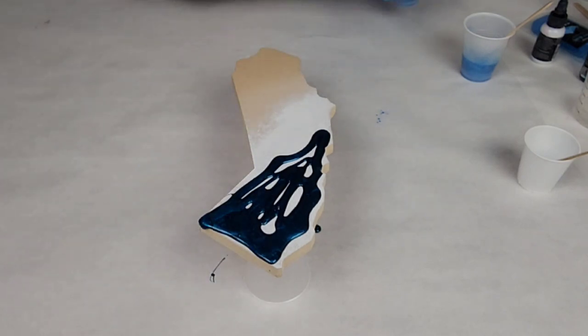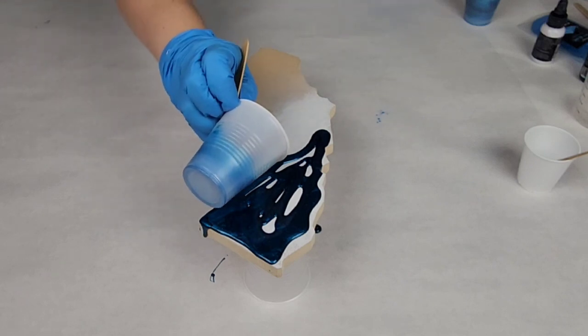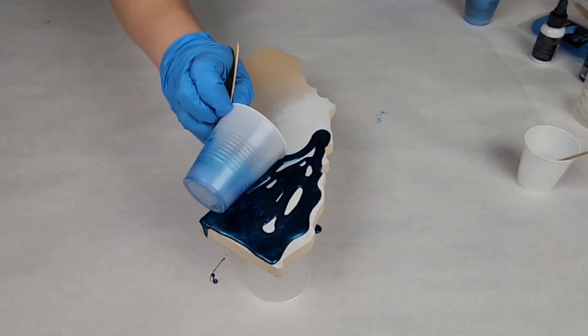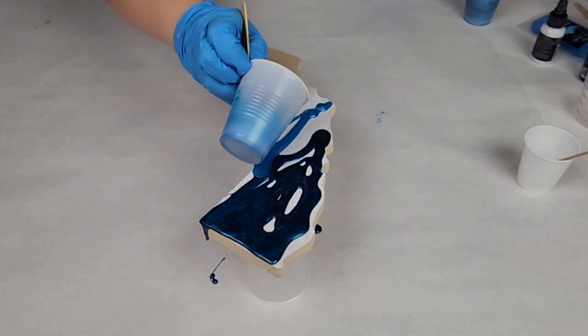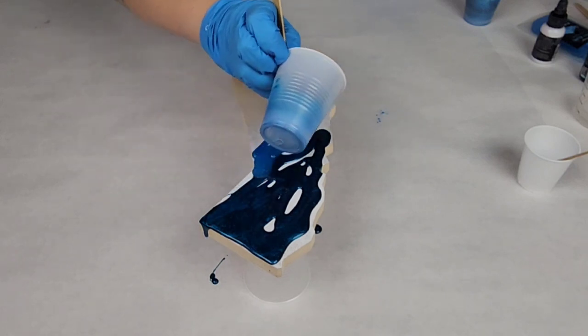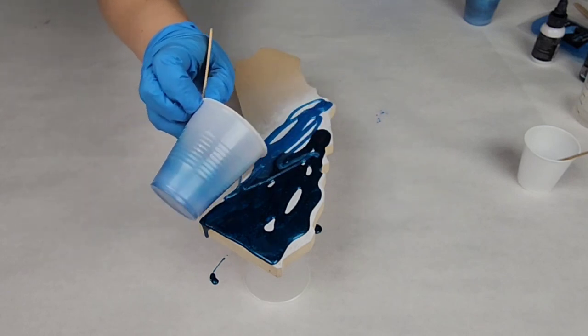And I'm mixing up two different blues, basically a dark blue, which is this one, and that's the mica powder mixed with the dye. And then a lighter blue, which is just the mica powder by itself. And then the white dye I will use for the foamy waves.